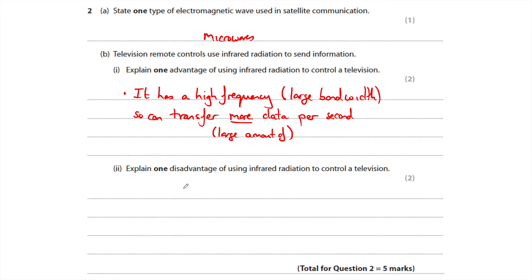Explain one disadvantage of using infrared radiation to control a television. Well, the key one is, of course, we know infrared needs line of sight—it will not pass through a wall, so you couldn't control your television from another room. Also, bright sunlight can cause interference with infrared, so it would be more difficult to use a television in bright sunlight. However, I would use the line of sight argument.